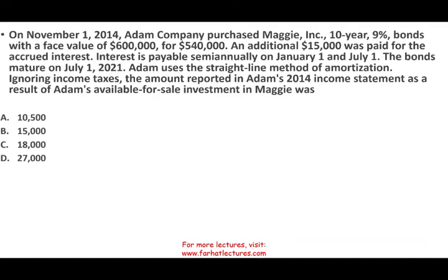Welcome to this session in which we look at a CPA exam question that deals with an investment that is available for sale. It includes accrued interest and bond investment amortization. So you have three different concepts going on at the same time that deal with a bond. You have to understand actually four different things: how bonds work, how accrued interest works, and how you amortize any discount or premium when you make an investment in an available-for-sale bond.